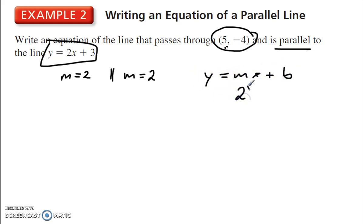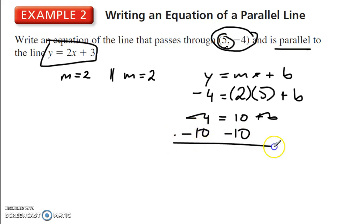We know the slope is 2, so we'll put 2 in for the slope. We know that x is 5, so we'll put 5 in for x. We know that y is negative 4, so let's put negative 4 there. So that gives me negative 4 is equal to 10 plus B.